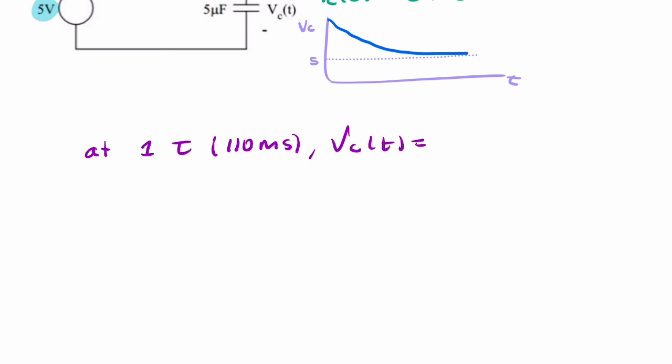VC would be 5 + 10e^(-1), and that gives you 8.7 volts.